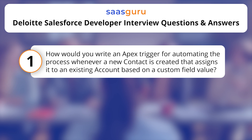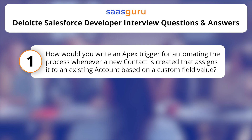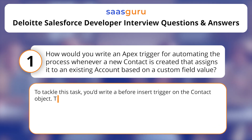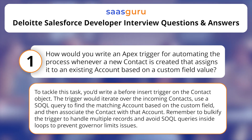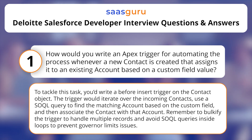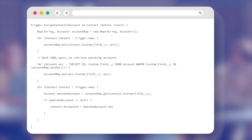How would you write an APEX trigger for automating the process whenever a new contact is created that assigns it to an existing account based on a custom field value? To tackle this task, you'd write a before-insert trigger on the contact object. The trigger would iterate over the incoming contacts, use a SOQL query to find the matching account based on the custom field, and then associate the contact with that account. Remember to bulkify the trigger to handle multiple records and avoid SOQL queries inside loops to prevent governor limits issues. Here's a simplified version of what the code might look like.